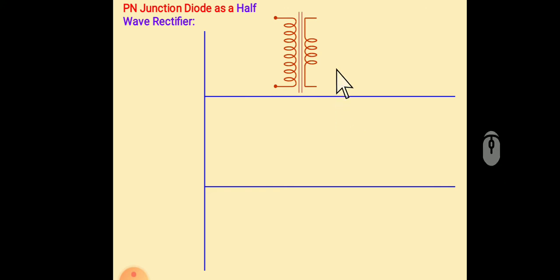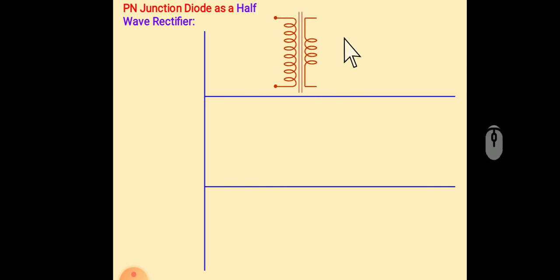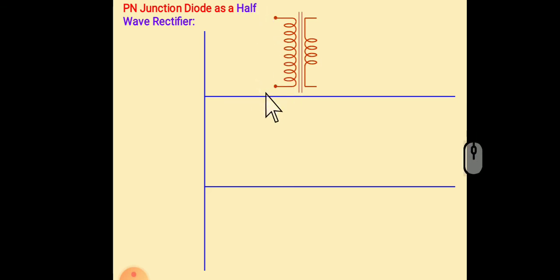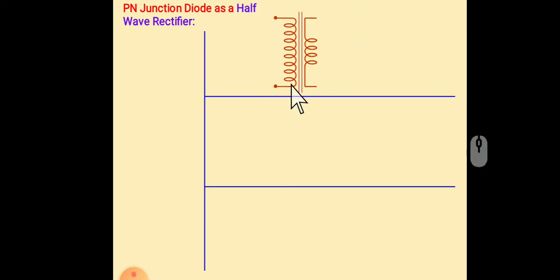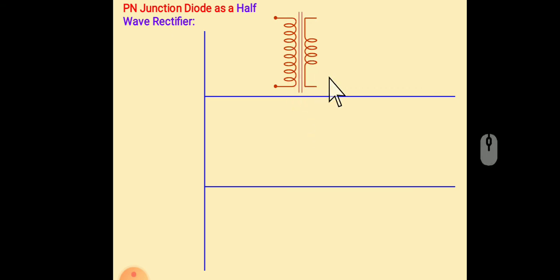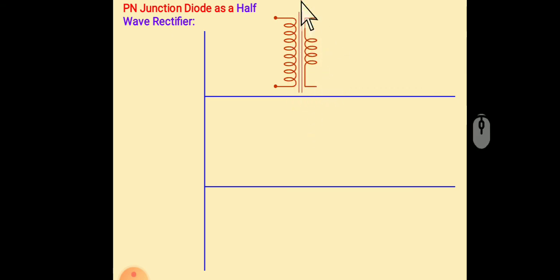For that we need a transformer, then an alternating source. As we know, transformer has two terminals — one is primary and another one is secondary. Then there is a core.